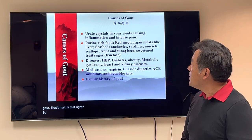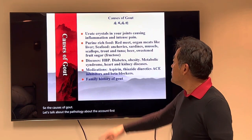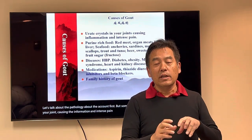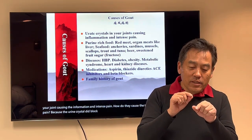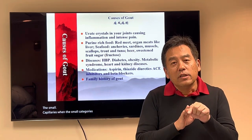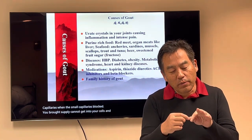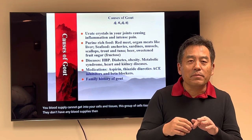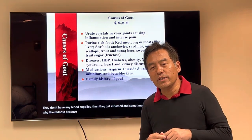So the causes of gout — let's talk about the pathology of gout first. The pathology of gout is urinary crystals in your joint causing inflammation and intense pain. The urinary crystals block the small capillaries. When the small capillaries are blocked, your blood supply cannot get into your cells and tissues. This group of cells and tissues don't have any blood supply, then they get inflamed and sometimes can die. So that's why there's redness — there's no nutrition getting into it.